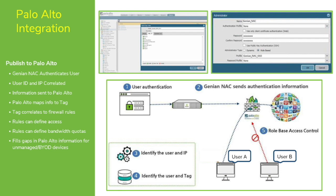Two brief examples. The first is an example of the ability to publish information gathered by your Genieans NAC network access control system to an external system that can use it because of a gap in its information. Because of where a firewall sits in the network, it lacks the ability to always correlate users, especially with unmanaged devices, with IP addresses — and therefore cannot craft specific security policies and bandwidth quotas, since the only information available is an IP address.